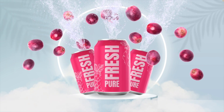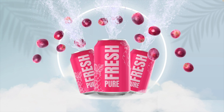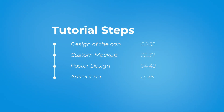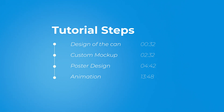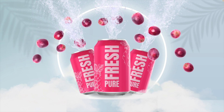In today's tutorial, we're learning how to make this cool animated design in Canva all the way from scratch, including the design of the cans all the way to the end production with the animation. The tutorial is split up into four parts: the design of the can, creating a custom mock-up, creating the overall poster or presentation design, and lastly the animation part. If you regularly work in Canva and want to save time with templates, check out the link in the description below.